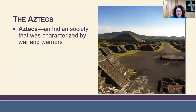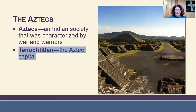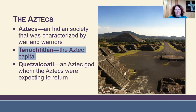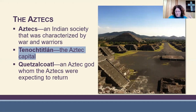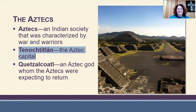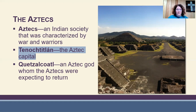Now looking at the Aztecs: their society was characterized by war and warriors, and every man became a part of the army. Their capital was Tenochtitlan, built out in the middle of a lake. The god Quetzalcoatl was one whom the Aztecs were expecting to return, and this belief made them open to deception by the Spanish conquistadors. When the Spanish came over, the Aztecs thought they were their god Quetzalcoatl, and the Spanish played into that to get their gold — and then killed them.